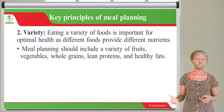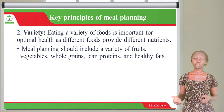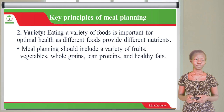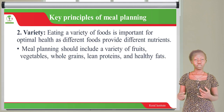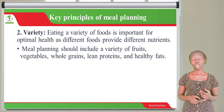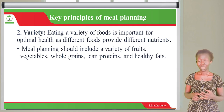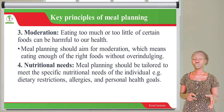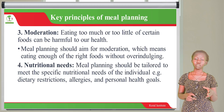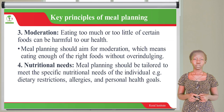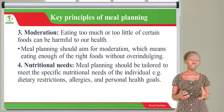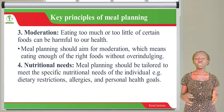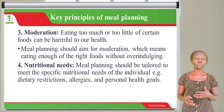Meal planning should include a variety of fruits, vegetables, whole grains, lean proteins and healthy fats. The third principle is moderation, because anything taken in excess will cause harmful effects to your body. Eating too much or too little of certain foods can be harmful to health. Meal planning should aim for moderation — meaning eating enough of the right foods without over-indulging. If you are eating beef, do not exaggerate portions; just eat enough to maintain proper function of your body.